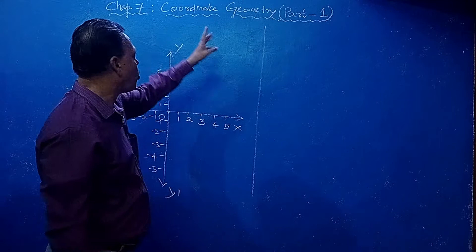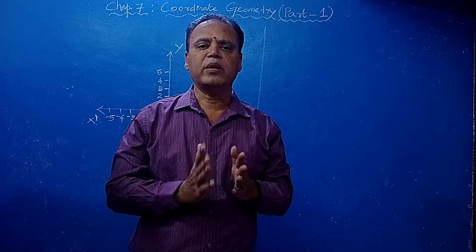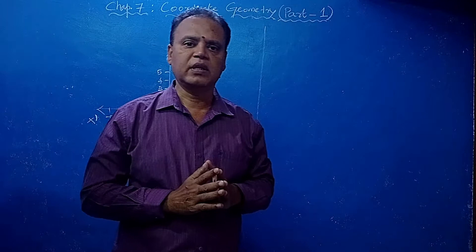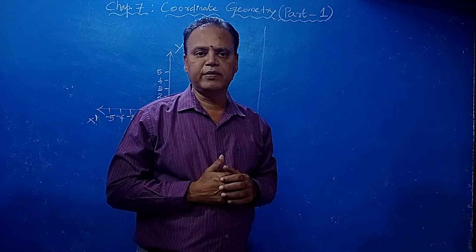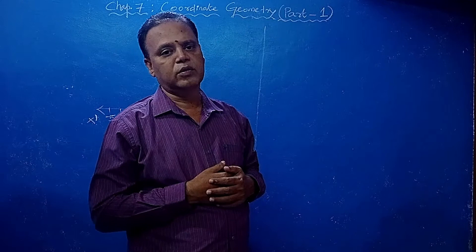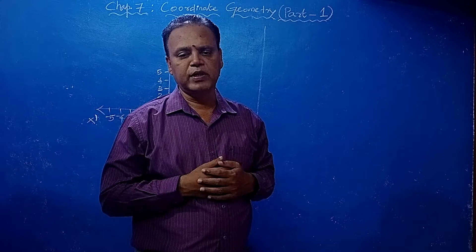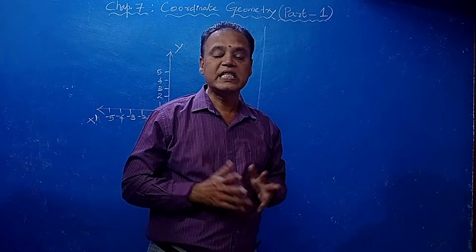We will start a very interesting chapter - Part 7, Coordinate Geometry Part 1. In this part, you are going to see some basic ideas of the Cartesian system, which you might have studied in 9th class also. Then we will see the distance formula, how to derive it, and problems on distance from graphs. So listen carefully.